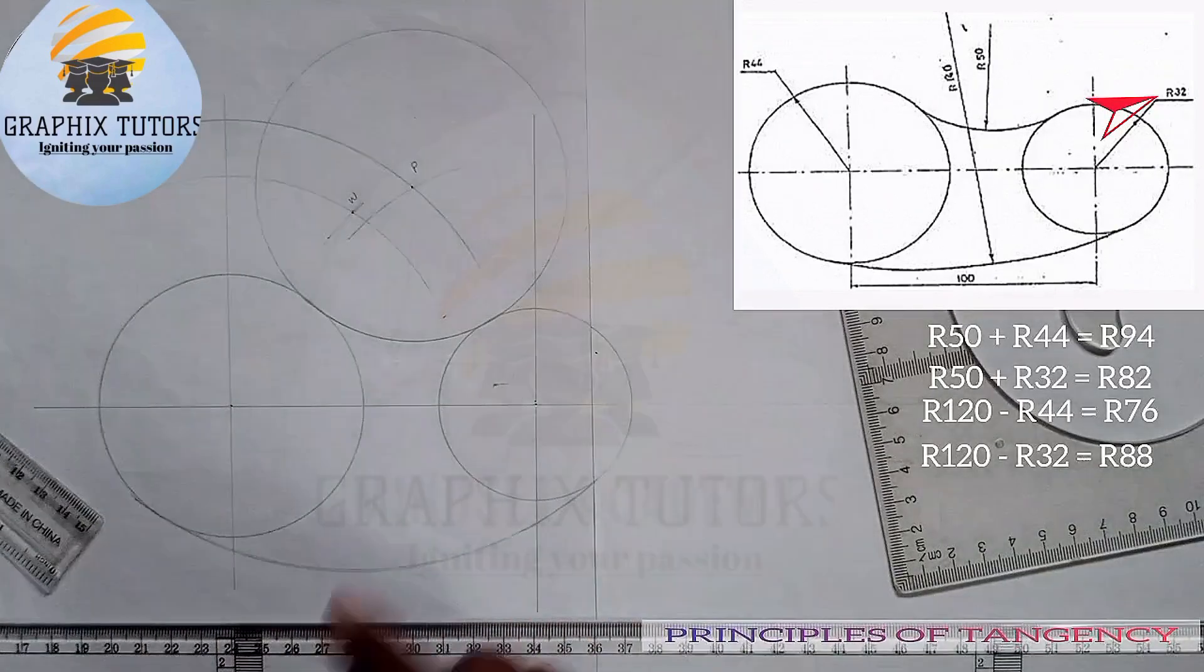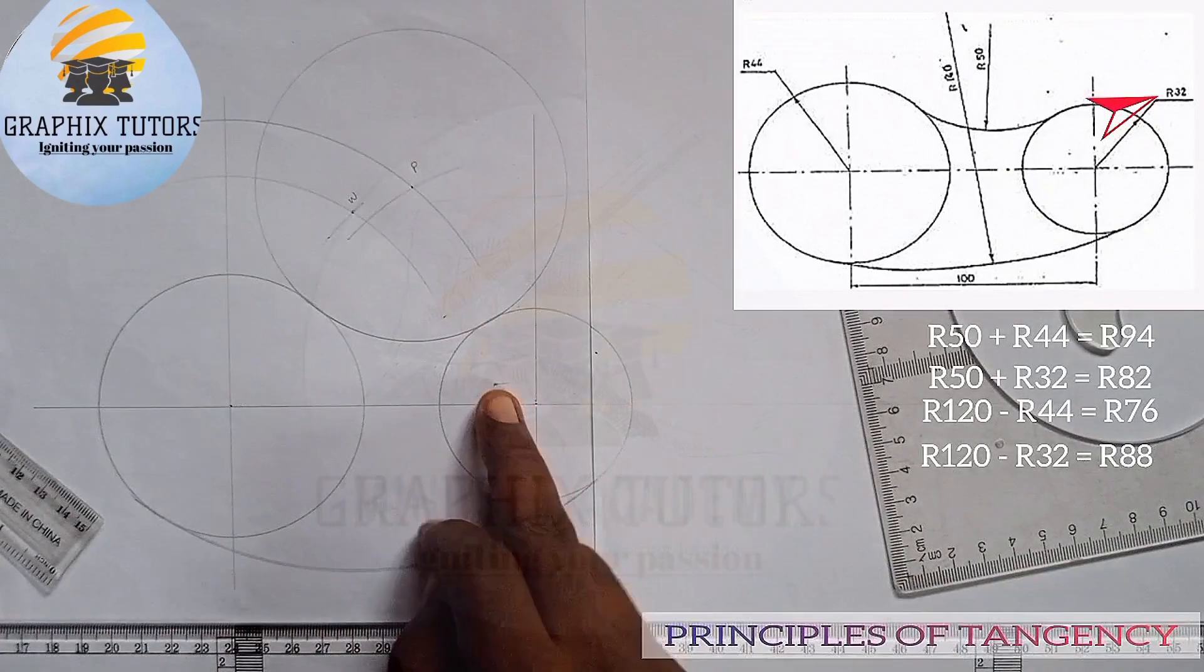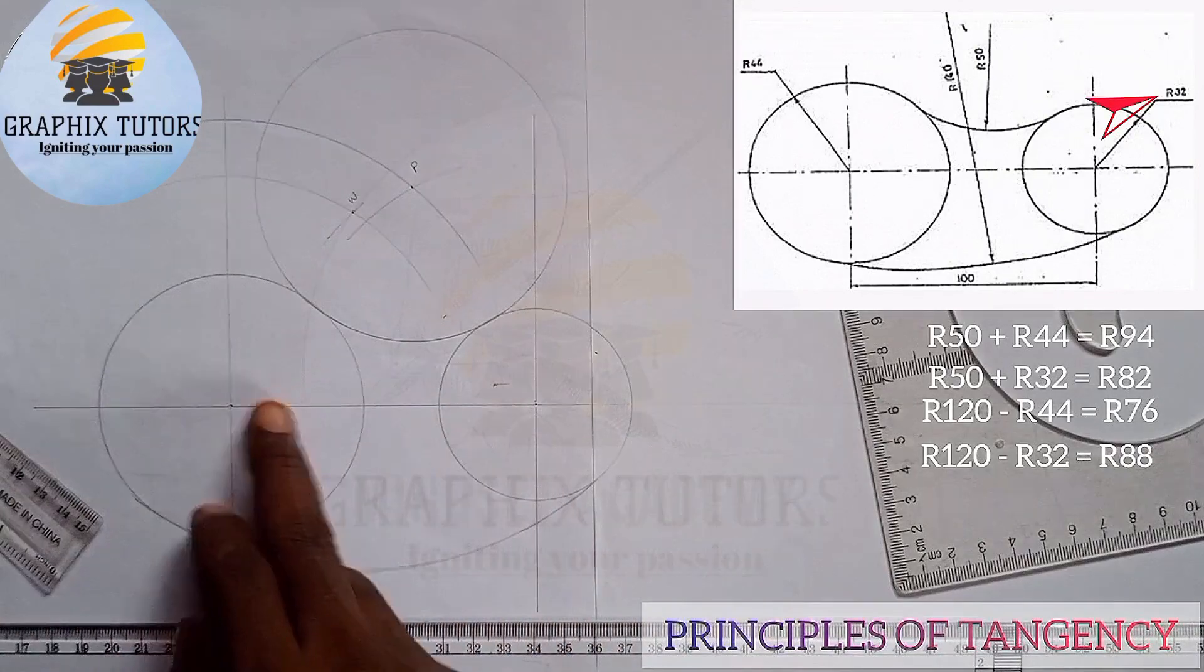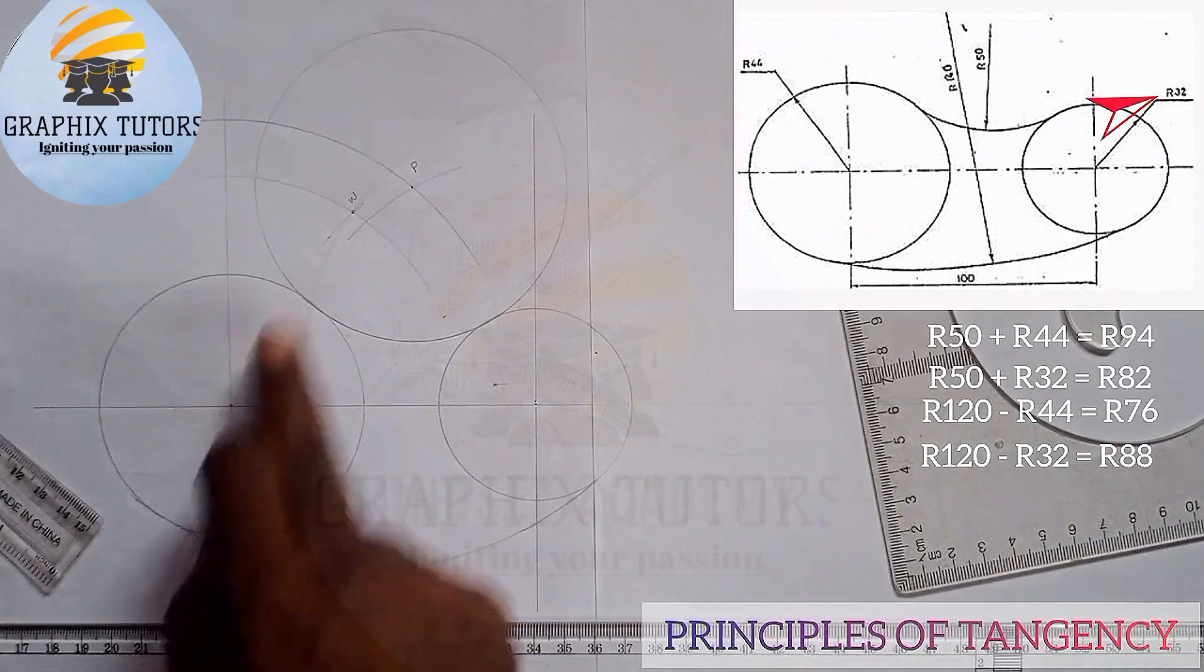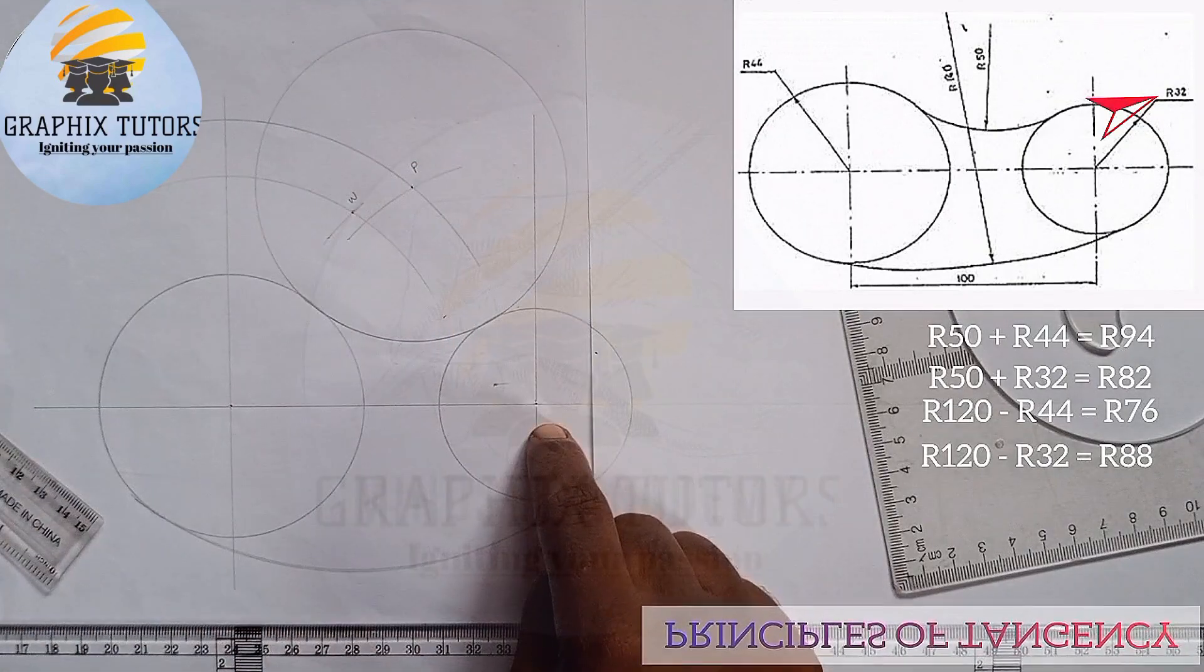Whenever two circles we are considering are external to a circle, you're going to add their radii. You add the radius of this circle and this to get an arc, and also add the radii of this circle and this circle to get the other arc.